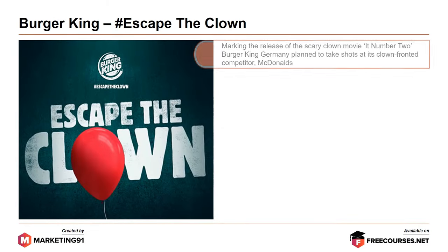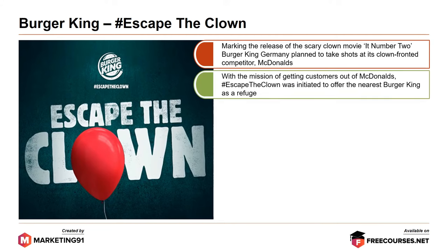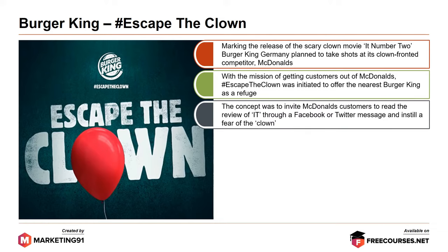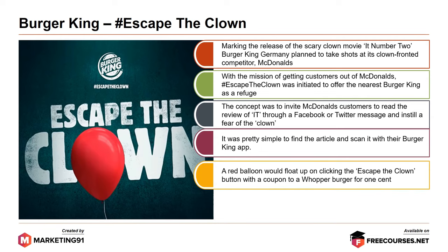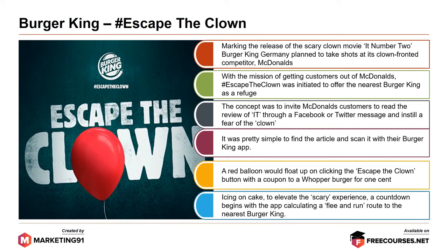Next, Burger King's Escape the Clown. Marking the release of the scary clown movie IT No. 2, Burger King Germany planned to take shots at its clown-fronted competitor McDonald's. With the mission of getting customers out of McDonald's, the hashtag Escape the Clown was initiated to offer the nearest Burger King as a refuge. Users were invited to read a review of IT through a Facebook or Twitter message to instill a fear of the clown, then scan it with their Burger King app. A red balloon would float up with a coupon for a Whopper Burger for one cent. To elevate the experience, a countdown begins with the app calculating a flee-and-run route to the nearest Burger King.